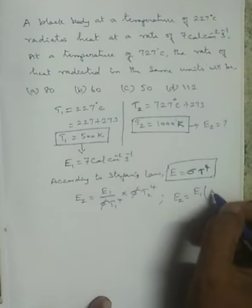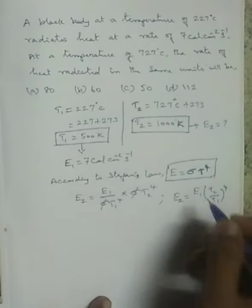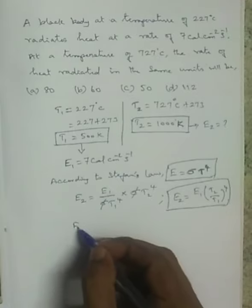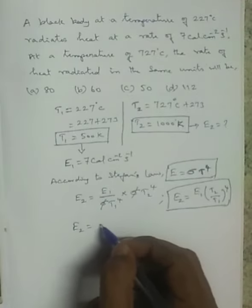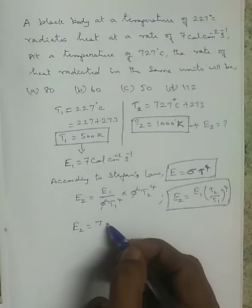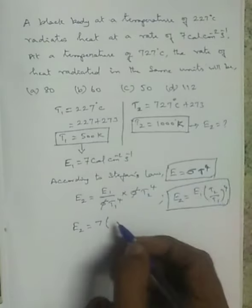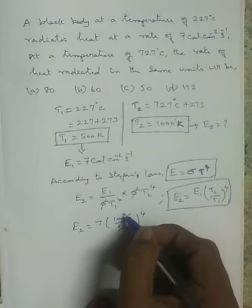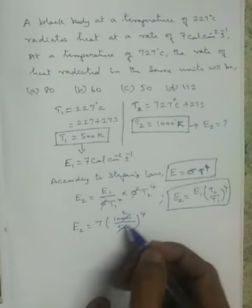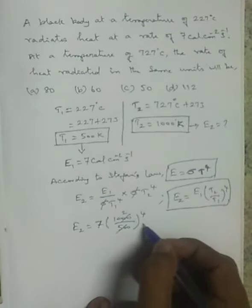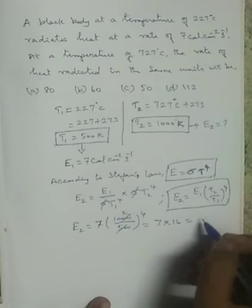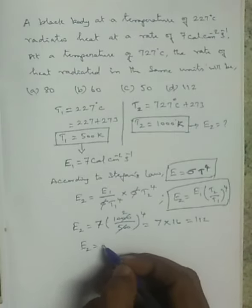Using E2 equals E1 times (T2 divided by T1) to the power 4: T1 is 227°C = 500 K, T2 is 727°C = 1000 K, so (T2/T1)⁴ = (1000/500)⁴ = 16. Therefore E2 equals 7 multiplied by 16, which is 112.